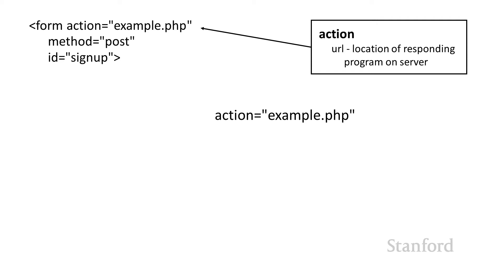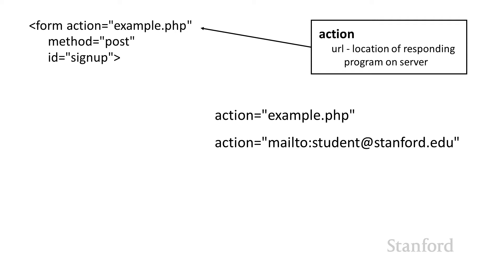If you're not working with a program on the server, you do have some options. You can use a mailto URL, and if the user has their web browser set up to interact with their email system, this would email the form information to you. Stanford also has special setups that can get you form information without any programming. But for now, we're going to look at what happens when a user submits information to the server — the most common case.